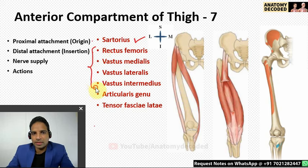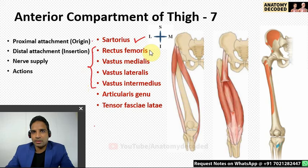The next four muscles are studied together: rectus femoris, vastus medialis, vastus lateralis, and vastus intermedius. These four muscles are grouped together and called the quadriceps femoris. Let's start with rectus femoris.